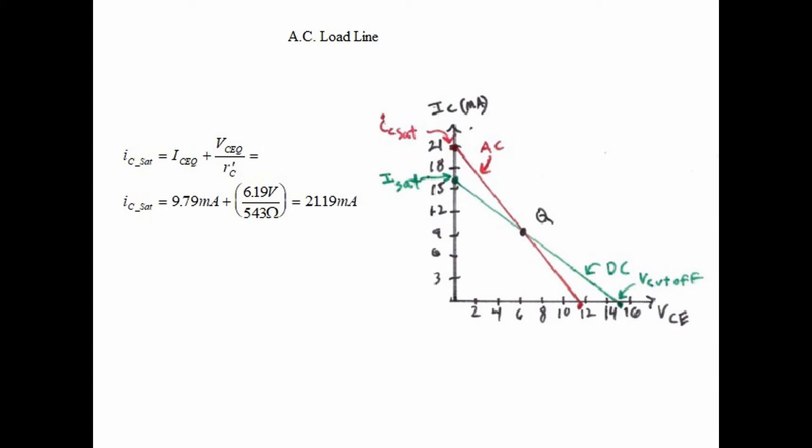Take AC current saturation which is 21.19 milliamps, plot that on the y-axis, and then draw a straight line from the AC saturation point through the Q point until it intersects the x-axis.